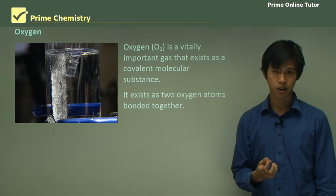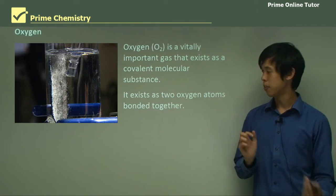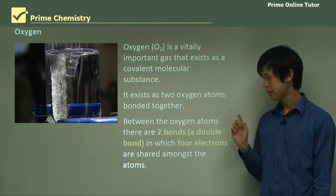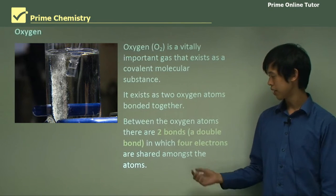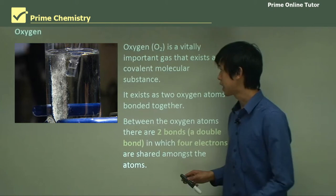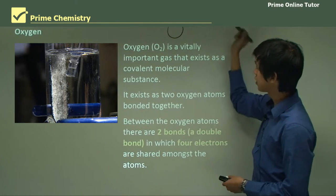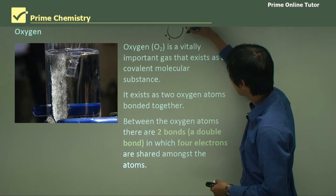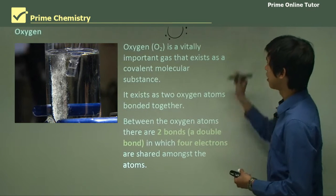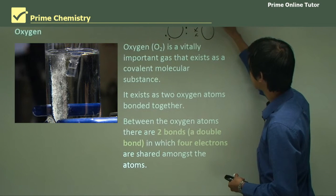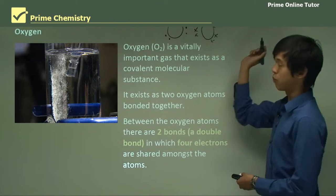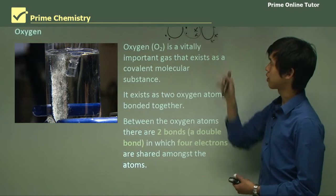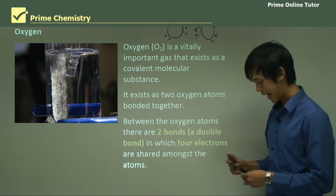So this diatomic oxygen exists as two oxygen atoms bonded together covalently. Now between the oxygen atoms, there are two bonds, which we call a double bond, in which four electrons are shared amongst the atoms. So here's one oxygen, and it's got six electrons in its outer shell. And it's found its partner, which has also six electrons in its outer shell. And what it will do to get eight is it will actually share, each atom will share two with the other atom, giving you eight electrons in each shell.